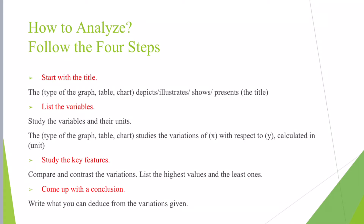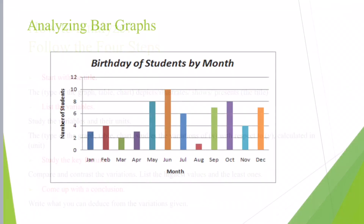Number three, you study the key features. Here you compare and contrast the variations. Remember to use transitions for comparing and contrasting, like both, however, unless, while, whereas, etc. Here you list the highest values and the least ones. Finally, in step number four, you come up with a conclusion, where you write what you deduce from the variations given.